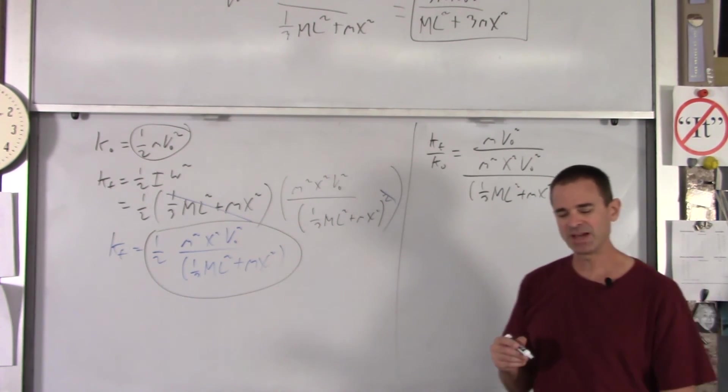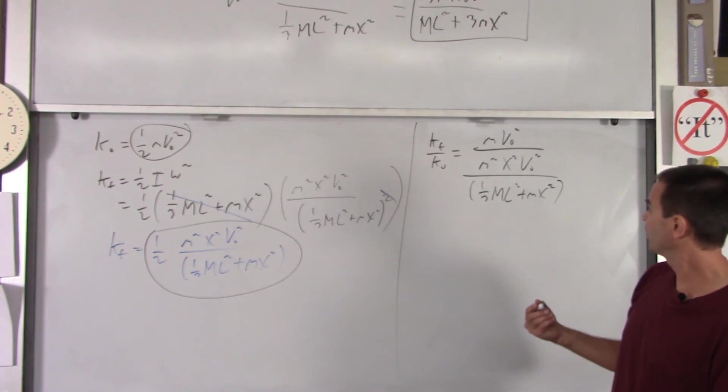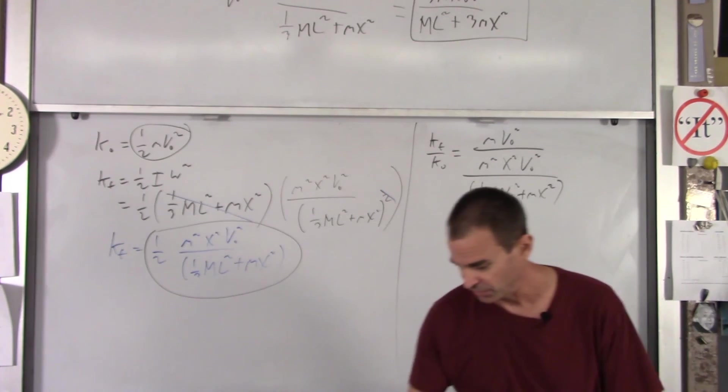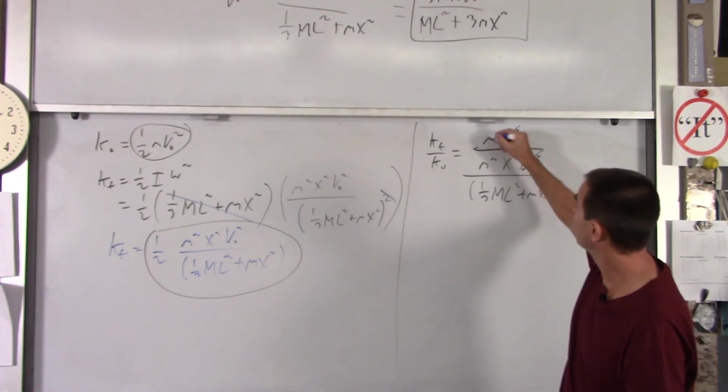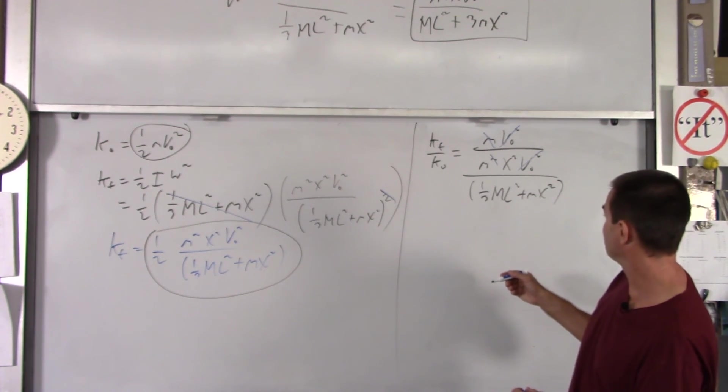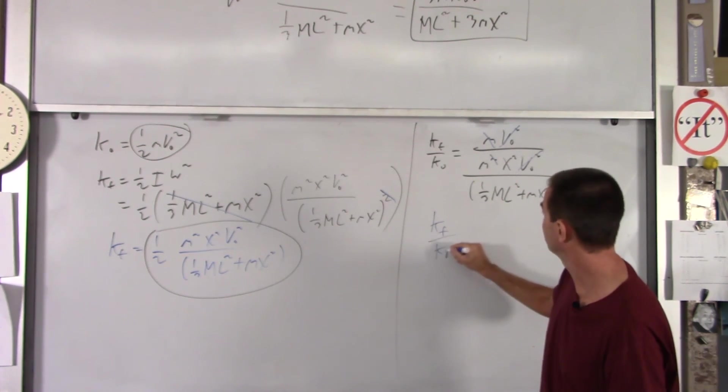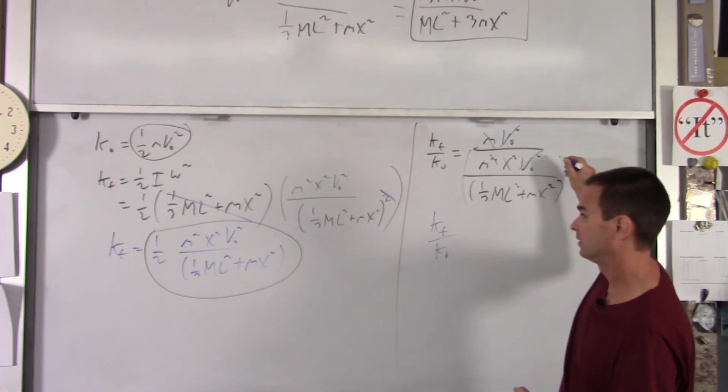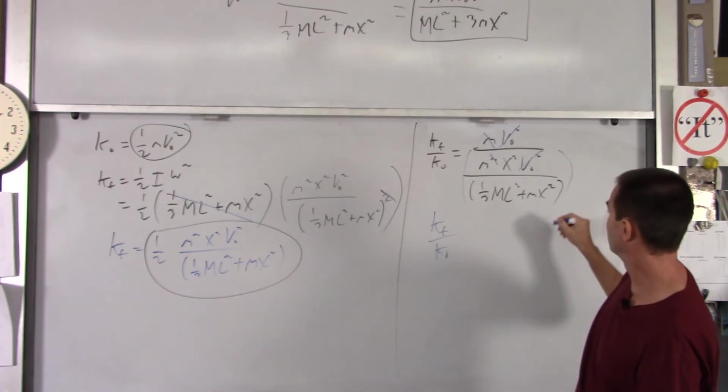So I've got little m V0 squared over this, which is little m squared, x squared, V0 squared, all over our 1/3 squared, big M, L squared plus m x squared. Now, there's a reason why I'm having you guys do this without numbers, and actually having you go through the math. Obviously, when you look at this, you'll hopefully note the V0 squareds drop out, one of the m's drops out.